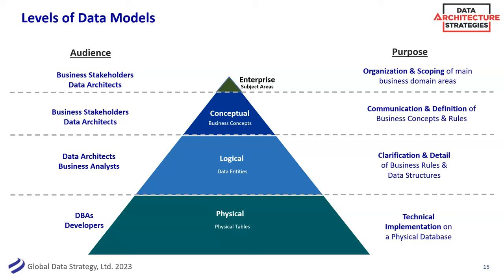I've seen horrible, embarrassing things for companies at each level when they do things wrong. I was at a retail site where a DBA shortened the product code field from 12 to 10 characters — it brought down their whole website and they couldn't sell products for two days. Why someone would think to shorten something that important without checking for impact analysis, I can't understand. All of these models are crucially important and they all fit together.